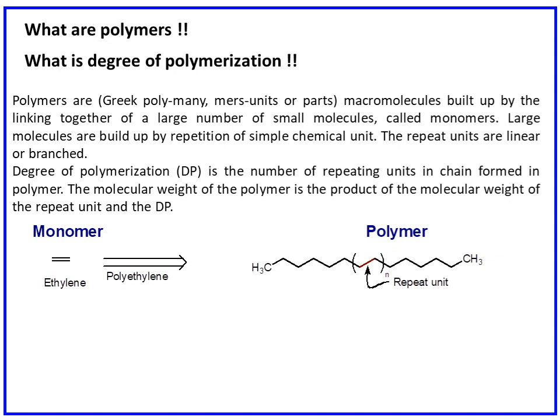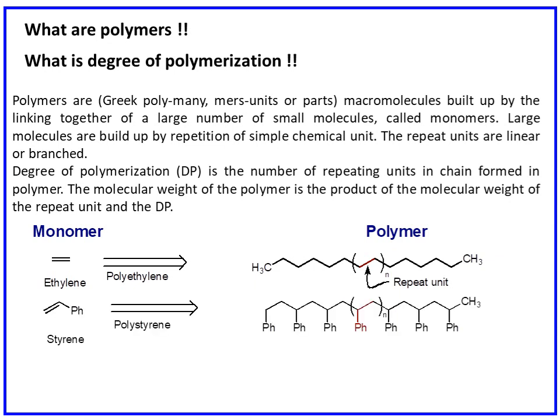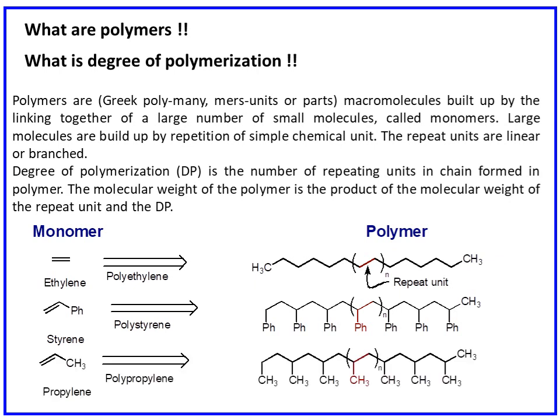Some examples of polymers composed of certain monomers: polyethylene is composed of repeating units of ethylene; polystyrene has styrene as monomer; polypropylene is composed of propylene units. Please draw these structures in your notebook along with the monomer units as well as the polymer structures.